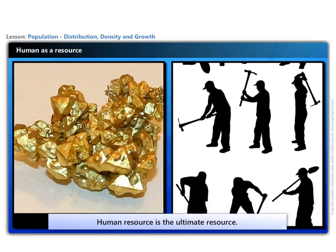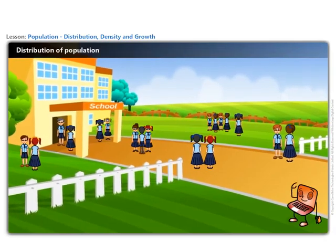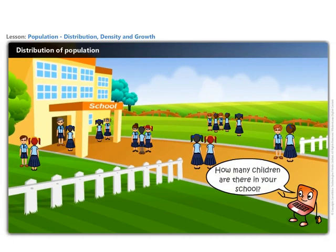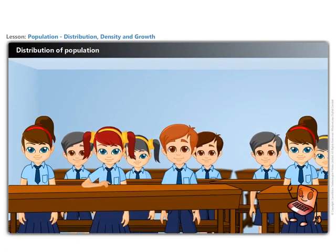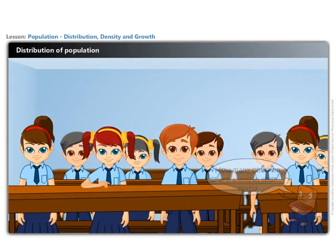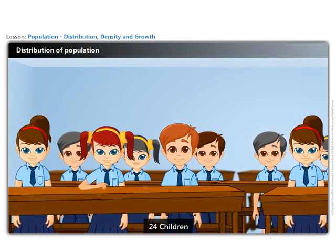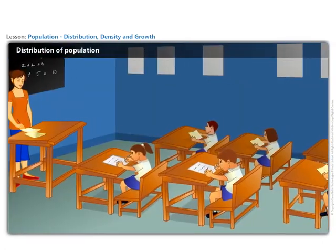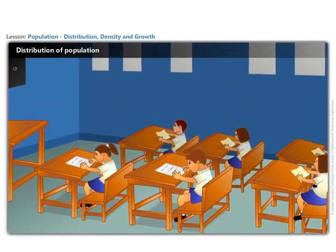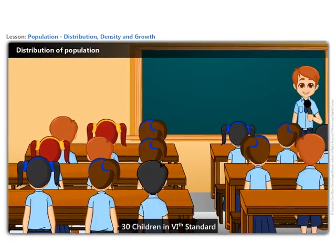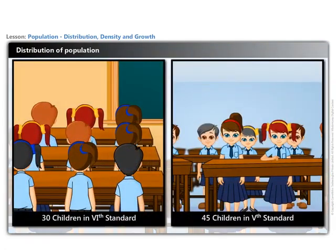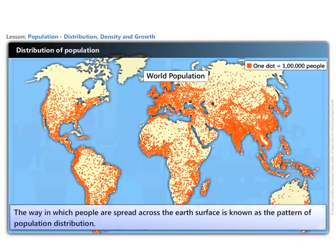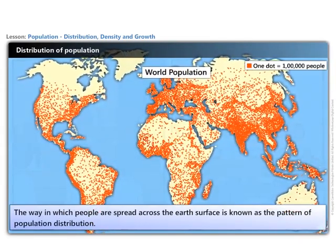How many children are there in your school? There are 500 children in your school. How many children are there in your class? There are 24 children in your class. Other classes have different numbers — say 30 children in class 6 and 45 children in class 5. The number of children is not evenly distributed in each class. The same way, people are spread across the earth's surface.